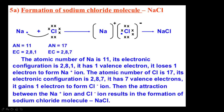Formation of sodium chloride molecule: sodium has atomic number 11, electronic configuration 2, 8, 1. Chlorine has atomic number 17, electronic configuration 2, 8, 7. Sodium loses 1 electron to follow the octet rule. After losing that electron, sodium's outermost shell has 8 electrons and it becomes stable. That electron is gained by chlorine, which now also has configuration 2, 8, 8 and becomes stable.